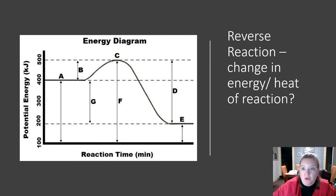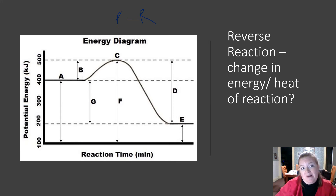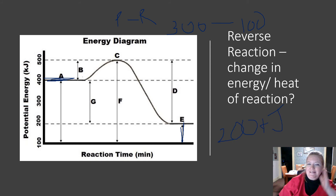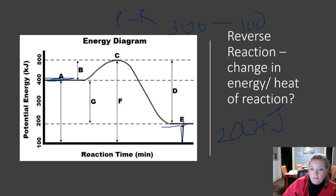What is the change in energy or heat of reaction for the reverse reaction? Remember the order matters: products minus reactants. The potential energy of the products was 300 (from 100 to 400), and the potential energy of the reactants was 100 (from 100 to 200). So 300 minus 100 equals 200 kilojoules. That makes sense because we know it's endothermic and the answer should be positive.